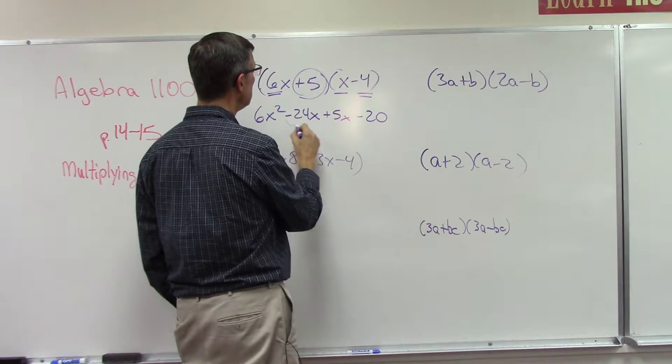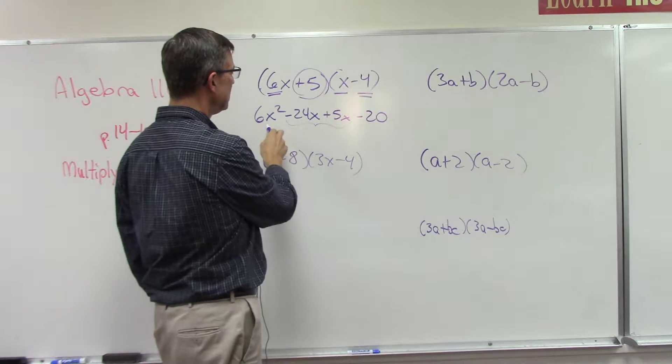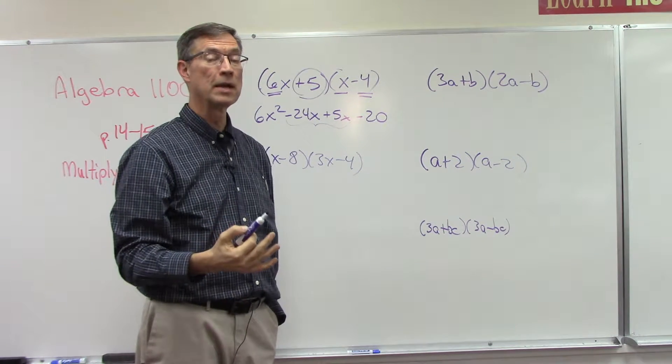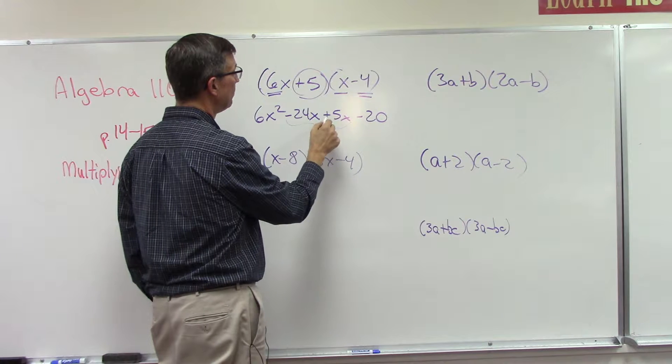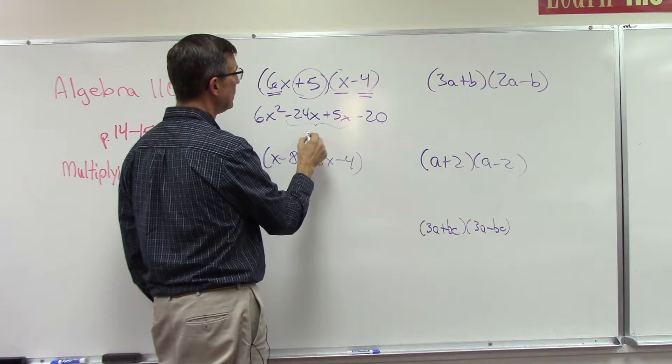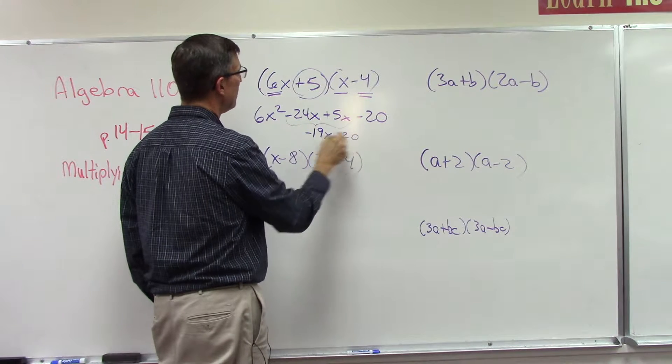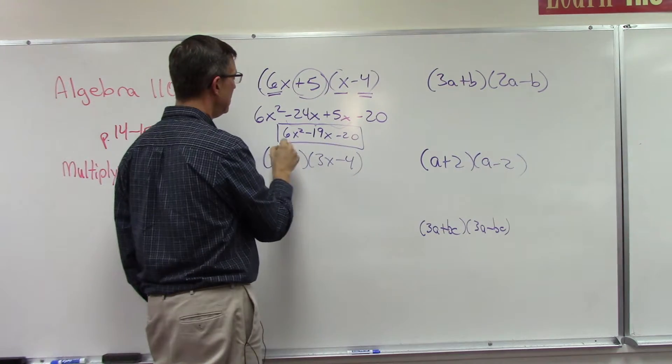We're almost done but we're not quite done. These are like terms. This has x squared, but this is just an x term and an x term, so they are like terms and we can actually combine them. Negative 24 plus 5 would give me negative 19x. Tack on the minus 20 and the 6x squared, and now we have the complete answer.